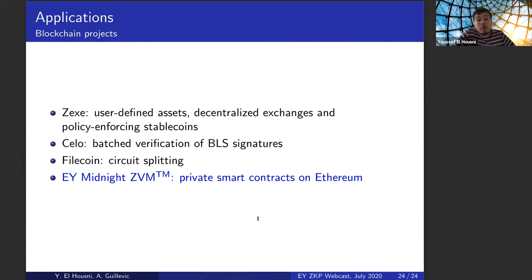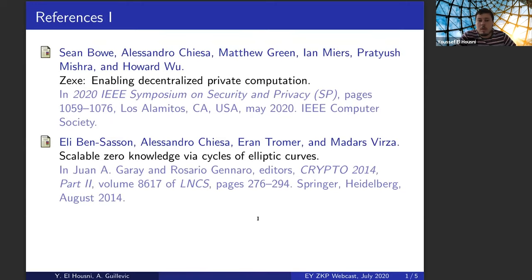Some applications that might be interested in this work. So of course is Zexe. So kudos to the folks behind Zexe, we can replace the CP6 curve by BW6 curve. So this has already been done in the Zexe repo pull request merge. So Celo is using Zexe system to batch BLS signatures. So we can also substitute the curves. Filecoin, so Ariel mentioned some time ago that they were considering circuit splitting. And lastly, EY Nightfall ZVM. That was introduced earlier by Michael. So we can use this curve also to have private smart contracts on Ethereum. And I think that's it for me.